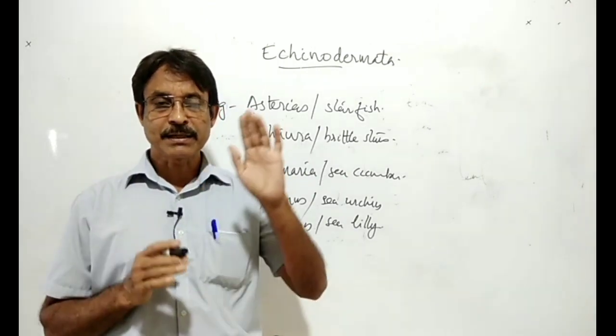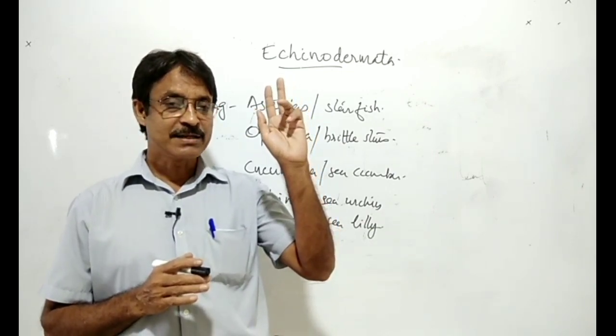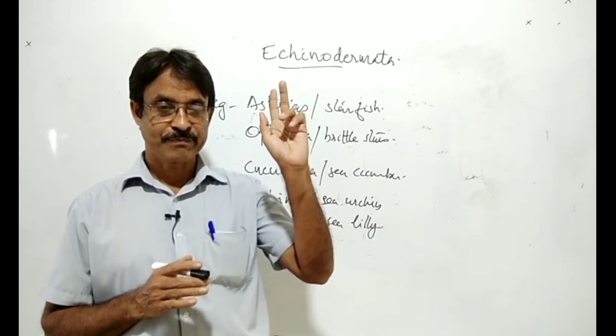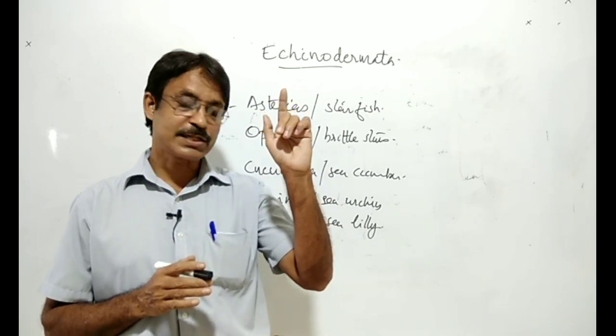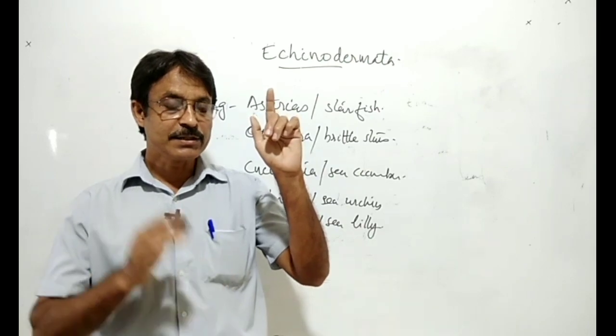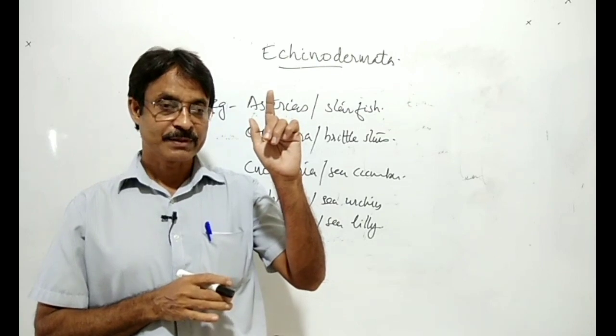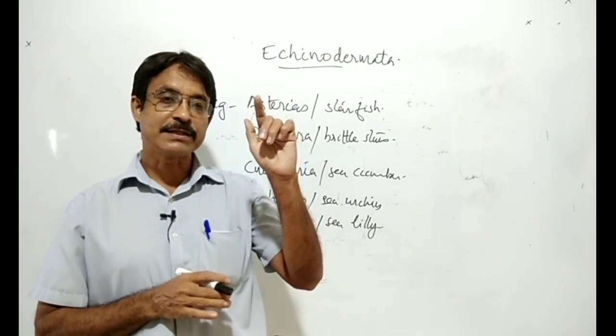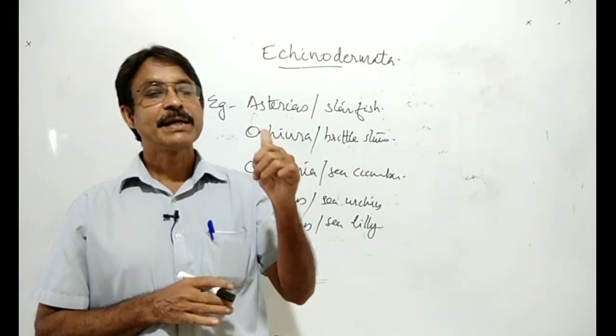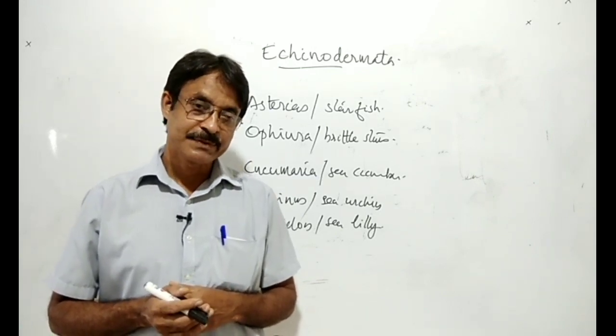If you are visiting certain beaches you can observe these echinoderms. The echinoderms are completely marine. Adults are radially symmetric, larvae are bilaterally symmetric. They have a water vascular system which does four functions. In the skin they have calcareous ossicles. Starfish is an example. So these are the important features. Thank you.